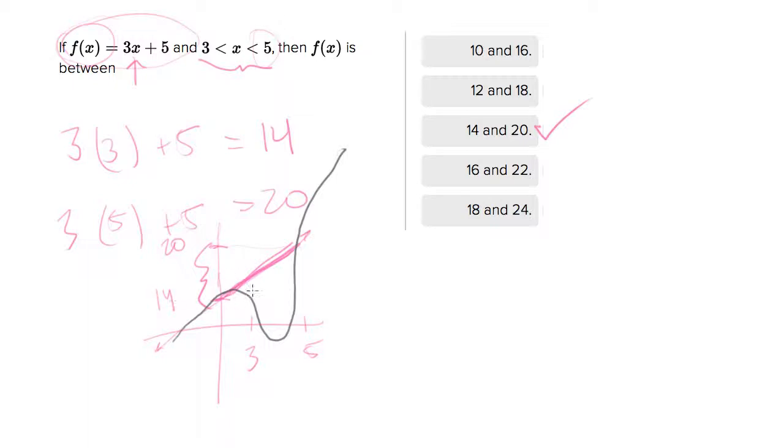So you might plug in 3 and you'd say, oh, for 3 I got this point, and when I plug in 5 I got that point. So 3 gives me 14 and 5 gives me 20, so the range is 14 to 20.